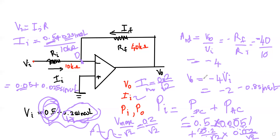The power gain is found by dividing P-out by P-in. I hope this makes sense. If you have any doubts please comment below. Thank you for watching.